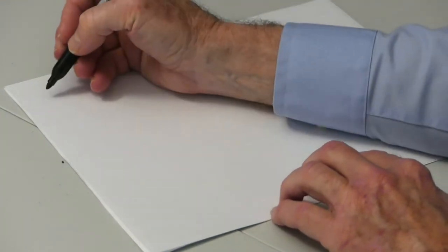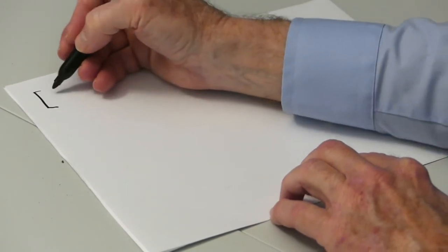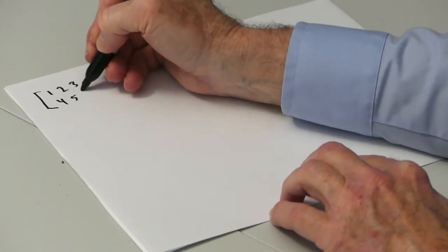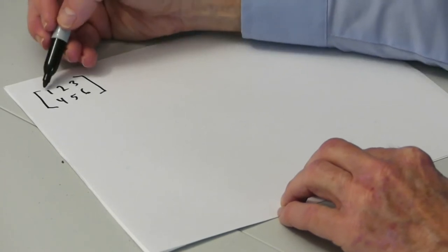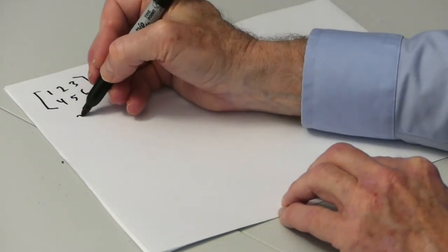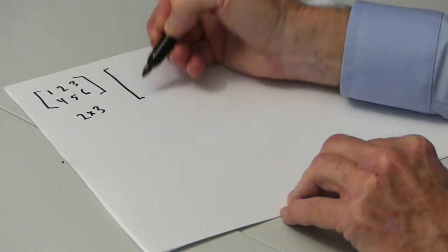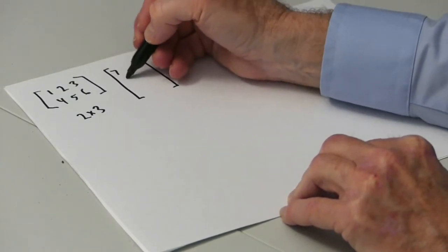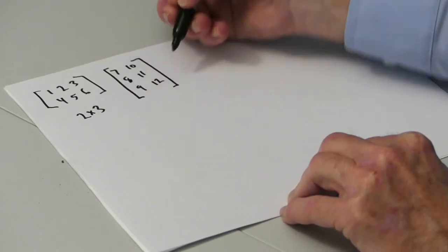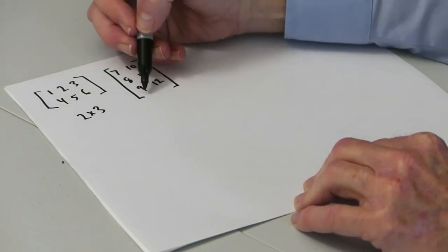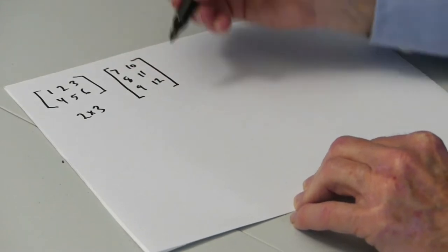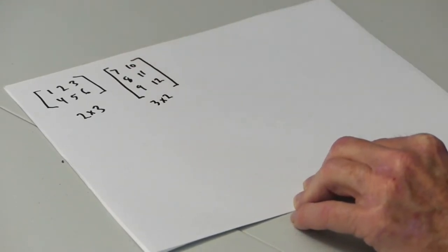Here's a quick overview of matrix multiplication. A matrix is a series of numbers arranged in rows and columns. This matrix has two rows and three columns. It's a 2 by 3 matrix. This matrix has three rows and two columns. It's a 3 by 2 matrix.